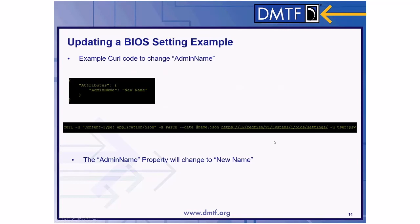There are many tools in different coding languages and several RESTful interfaces that can be used to configure a system through Redfish. In this case, I'm using curl to change the admin name. I have a JSON file with an attributes object containing admin name with the new name, because that is how it looks under the BIOS resource. In the curl command, I specify the content type as JSON, the method as PATCH, provide the JSON file, the URI of the pending settings, and the username and password. This command should change the admin name property to the new name.